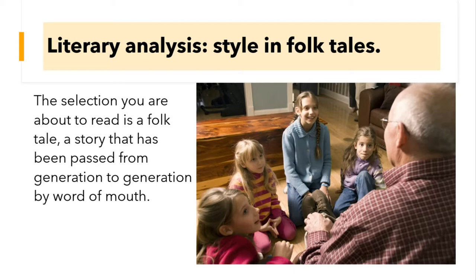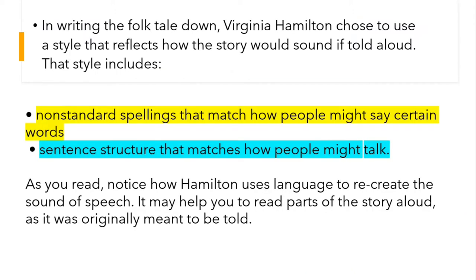The selection you're about to read is a folktale, a story that has been passed from generation to generation by word of mouth. In writing the folktale down, Virginia Hamilton chose to use a style that reflects how the story would sound if told out loud. That style includes non-standard spellings that match how people might say certain words, and sentence structure that matches how people might talk.